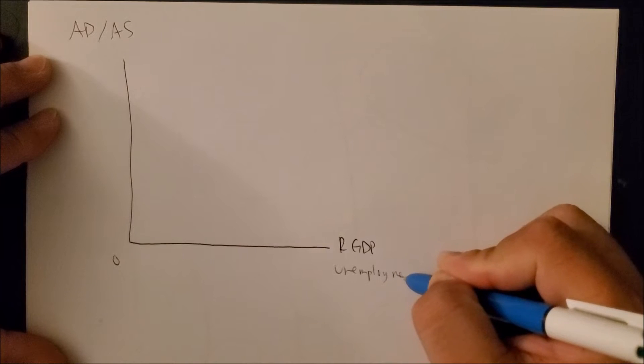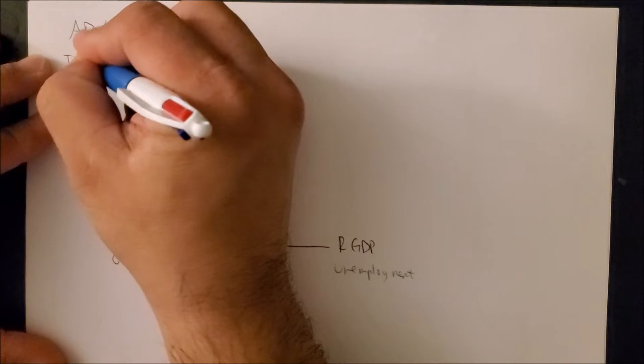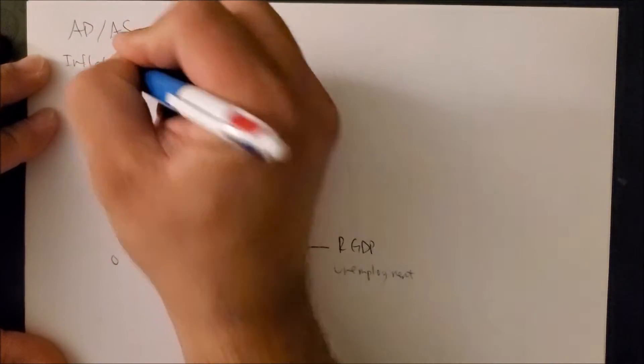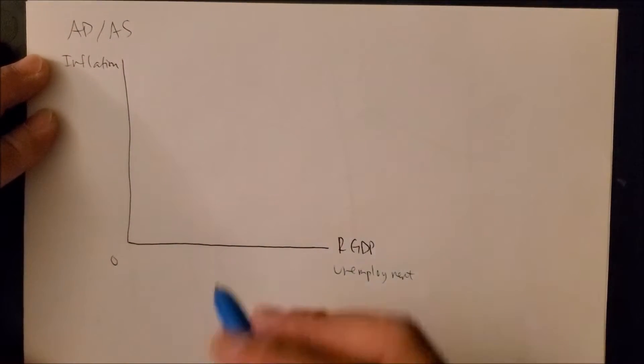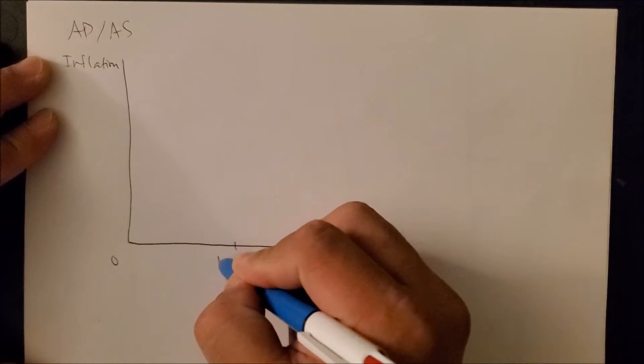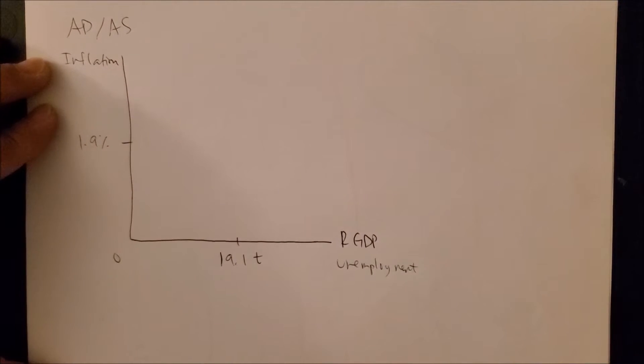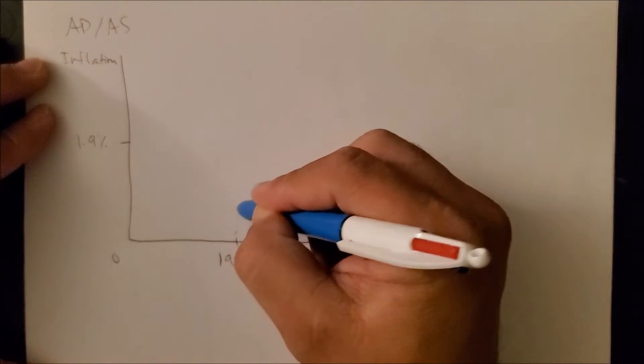On the y-axis we can put inflation, which is the price level of an economy. And let's just use numbers on the x-axis: 19.1 trillion dollars and 1.9 percent level of inflation on the y-axis. And now once we have our point A, our equilibrium point, we can now draw our AD and AS curves.